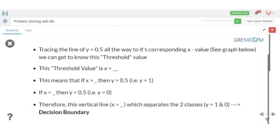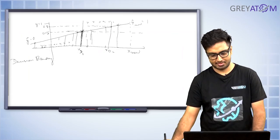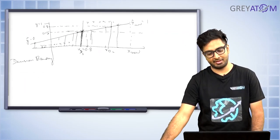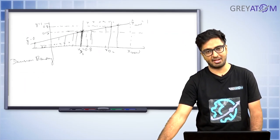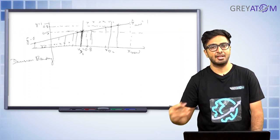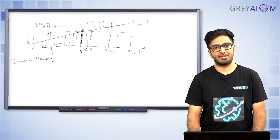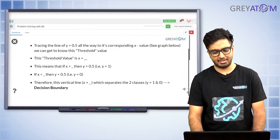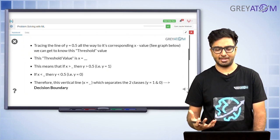Say the threshold value of X (xd1) equals 0.8. That means for every tumor size greater than 0.8 it is classified as a positive class — a malignant tumor — and if the size is less than 0.8 it's classified as a negative or benign tumor. That's the whole intuition behind the decision boundary: it's clearly the value of X which separates positive and negative class predictions.